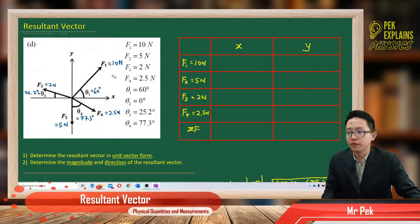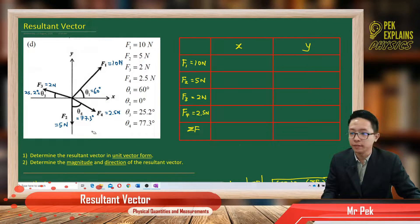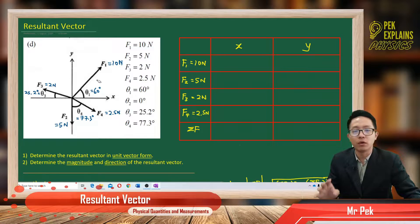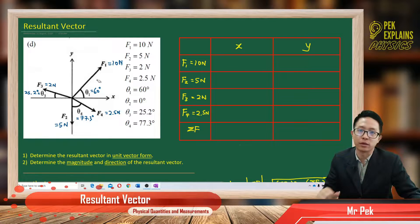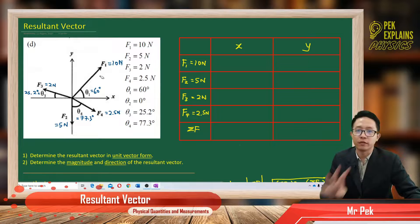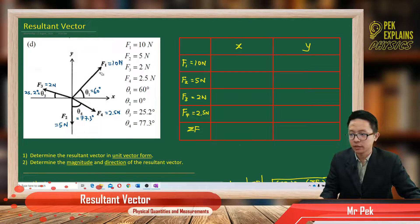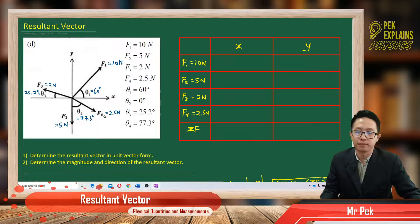Before we want to find the resultant vector, we have to resolve all the forces into X and Y components. Here, we have 4 vectors: F1, F2, F3, and F4.